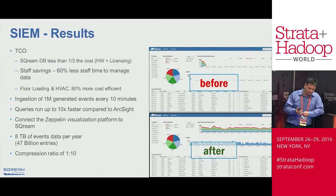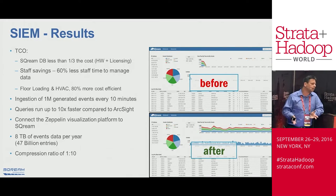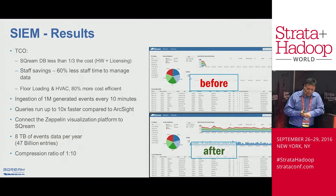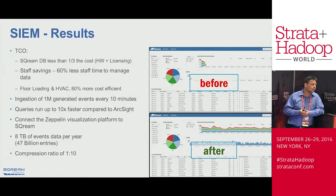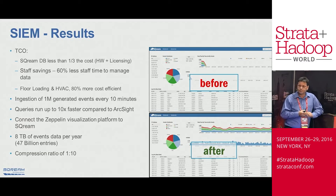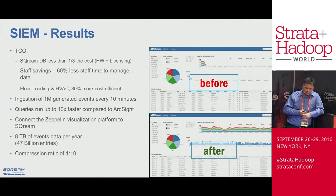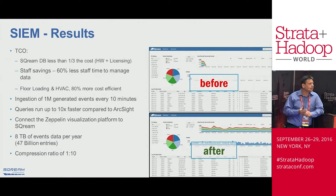You can also see on the standard graph — the same graph they used before and after — that using SQream they are running on a much larger timeframe and using fewer human resources to achieve that. The most important thing visible in the 'after' state is that you can go all the way back a year and see the anomalies.